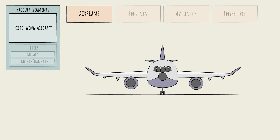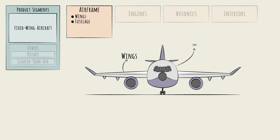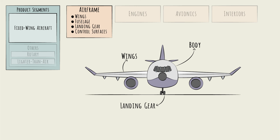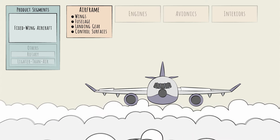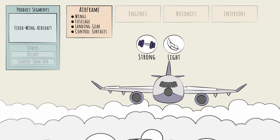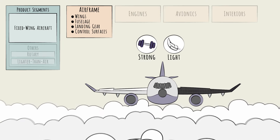The airframe is the structure of the aircraft, and it includes the wings, the fuselage — the body of the plane — the landing gear, and all of the so-called control surfaces. These are the elements that the pilot can use to control the plane, like flaps for lifting the nose up and down, or ailerons for tilting the plane when turning. Airframes must perform under tremendous stress while remaining as light as possible, so some of the most cutting-edge materials, like aluminum alloys and carbon fiber composites, are often used.